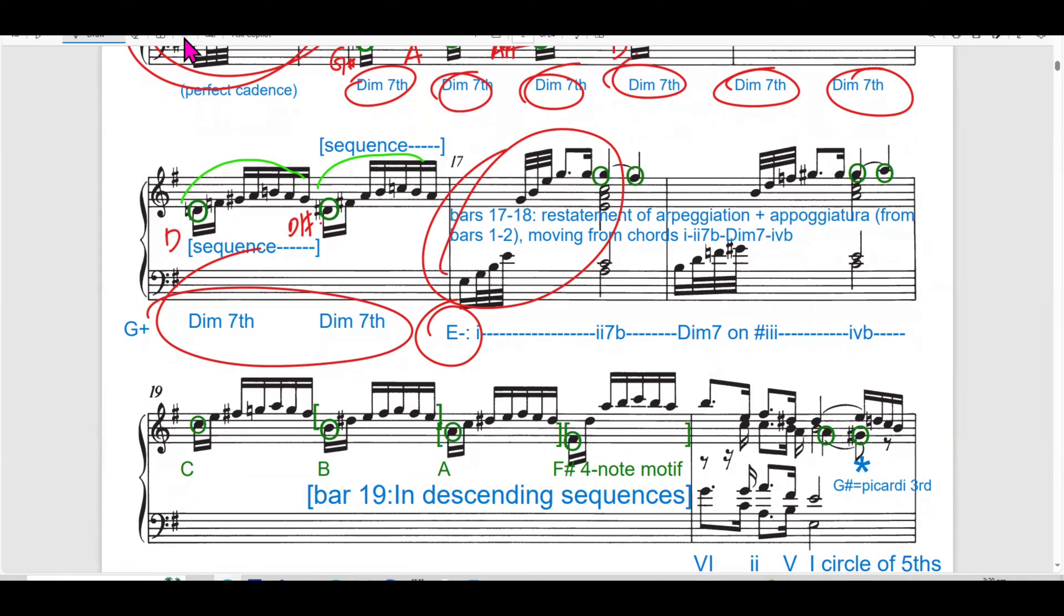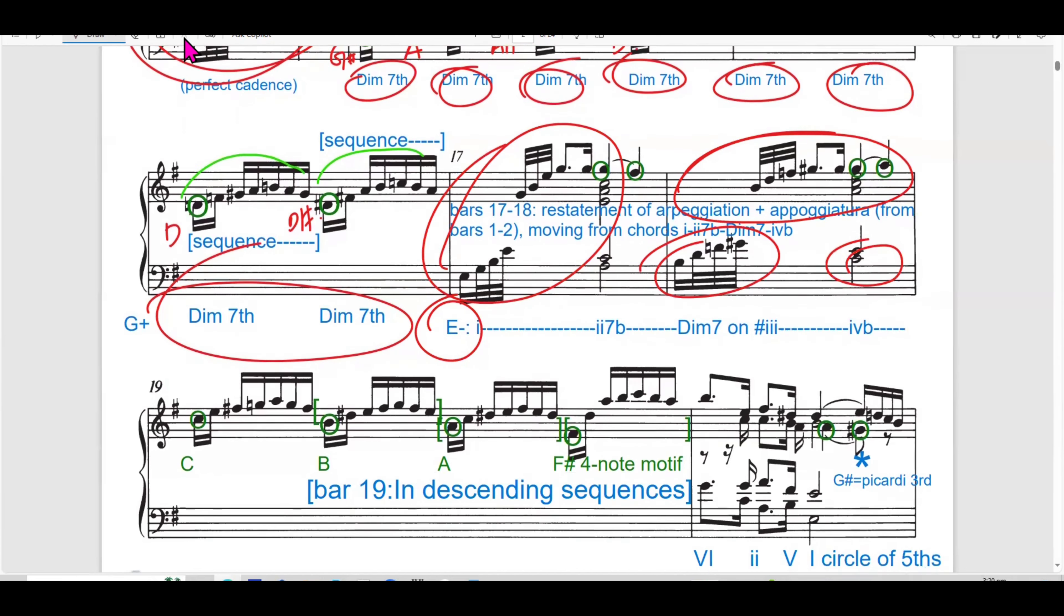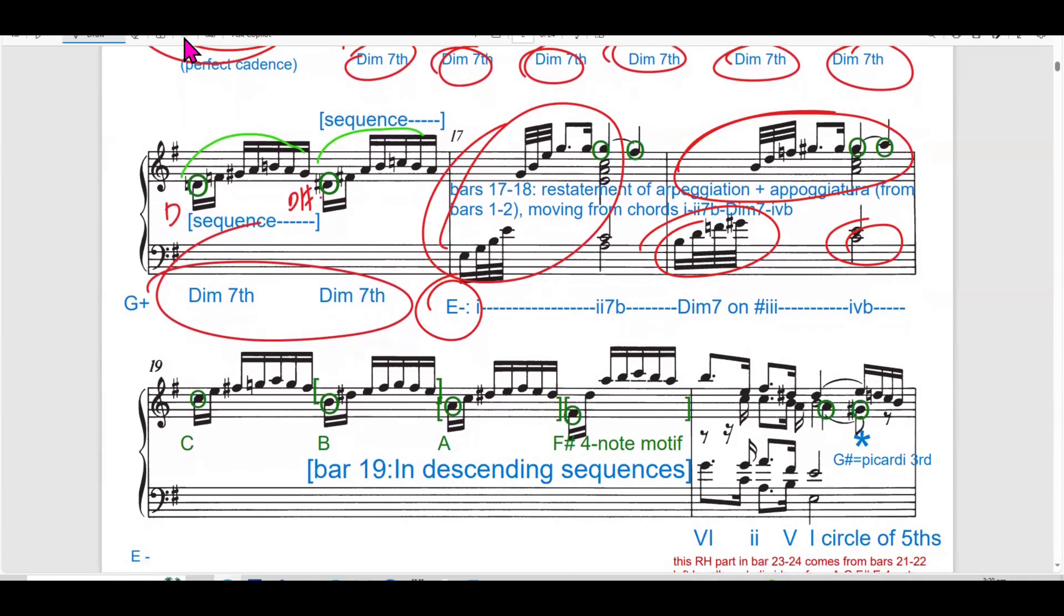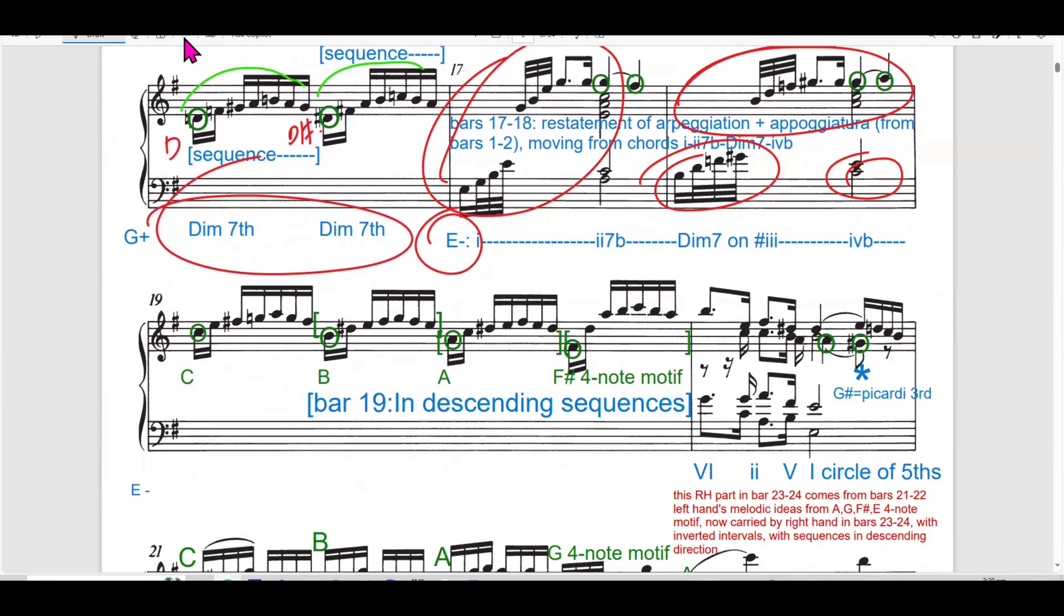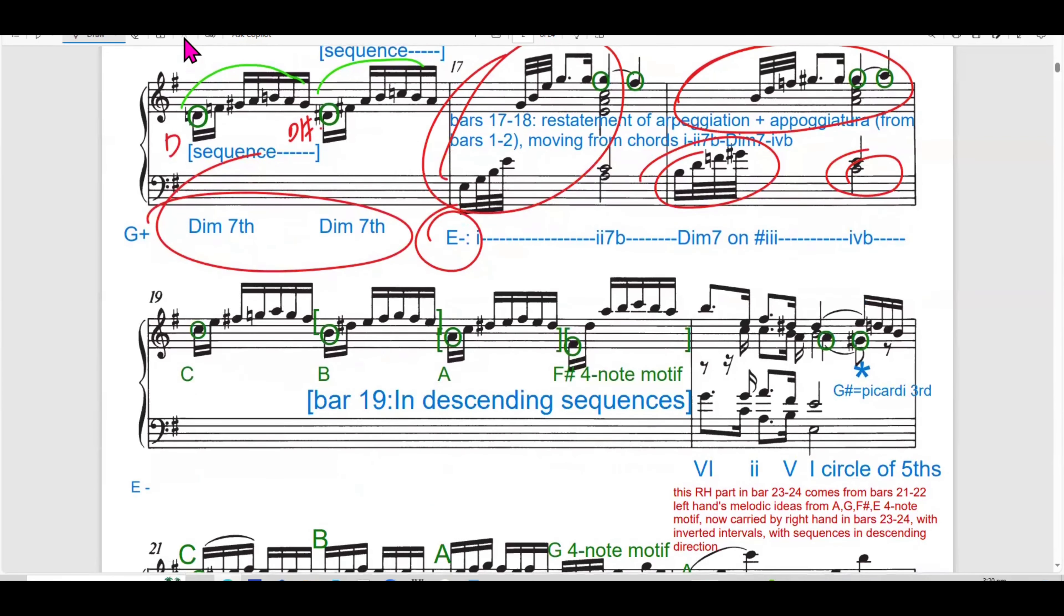The interweaving of voices in the right and left hand is balanced by symmetry of sequences. The diminished 7 chord enhances the harmonic instability, driving towards a resolution. The purpose of this is that Bach uses the ascending sequences to create momentum, pushing the harmonic progression forward while maintaining a sense of unresolved tension through the diminished 7 chords.